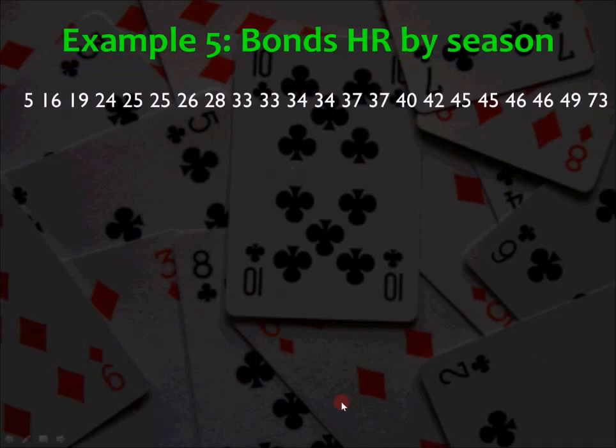Example 5, we're going to look at Barry Bonds' home runs by season. Now, Barry Bonds was a slugger for the San Francisco Giants. He's under suspicion for might have, he might have cheated, but that's for another day. But these are the number of home runs he has hit in a season. Now, these are not in chronological order. I have put them in numerical order for your convenience. And I want you to do three things. First of all, find the median, then find the mean, and then make a histogram or a stem plot, if you will, either one of the distribution. So go ahead and take a couple minutes to do that, and we will resume the video when you're ready.